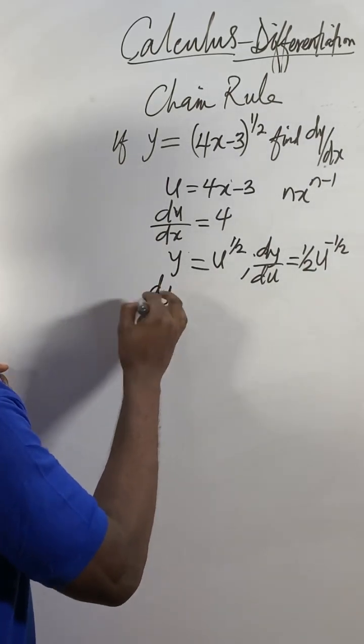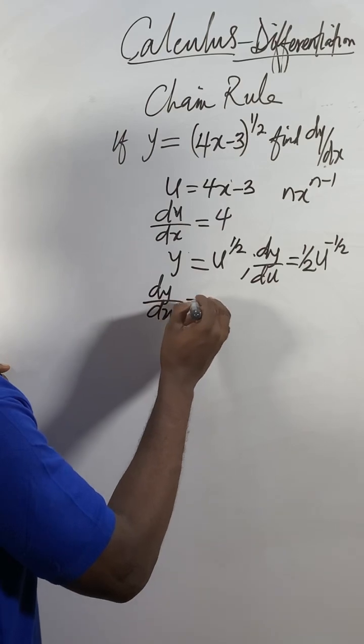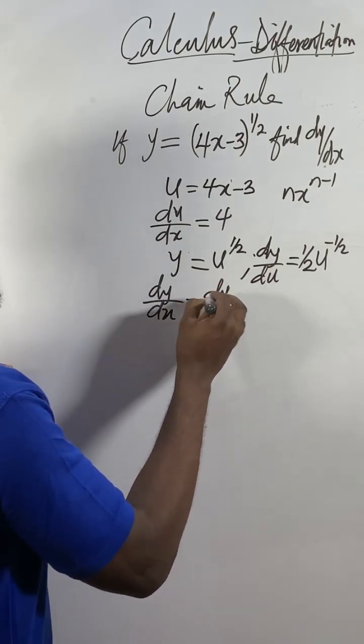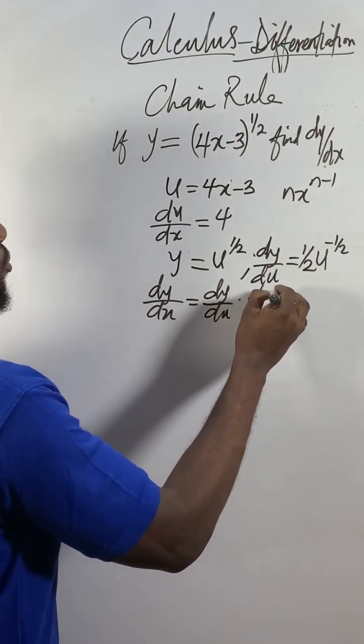Now apply the chain rule formula: dy/dx = dy/du * du/dx.